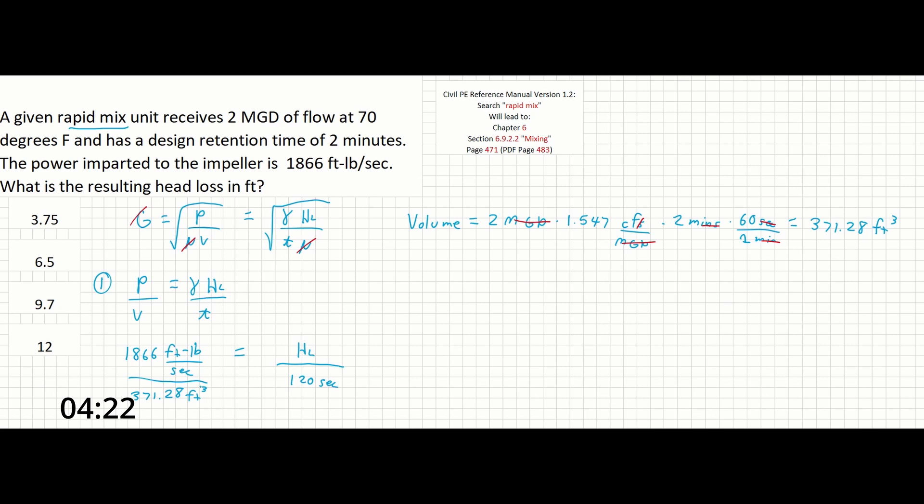And finally we need to find gamma. If you're completely stumped you could probably guess that gamma equals 62.4 pounds per cubic foot as that's the standard unit weight of water. But there is somewhere else we can get it. In this case gamma comes from section 6.2.1.6 on page 316 of version 1.2 of the reference manual in a table called properties of water. On this table various physical properties of water are recorded at different temperatures. At 70 degrees Fahrenheit we can see on the table that gamma equals 62.3 pounds per cubic feet.